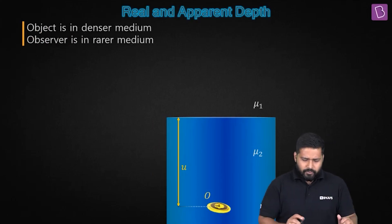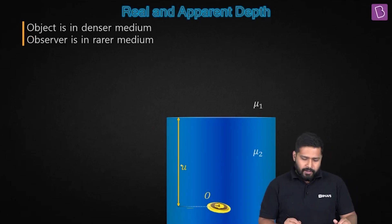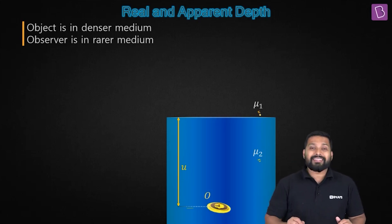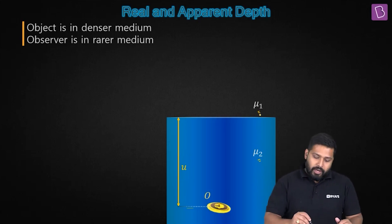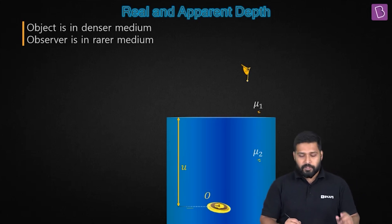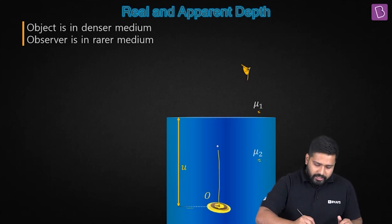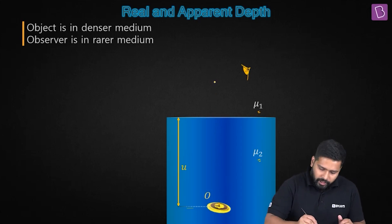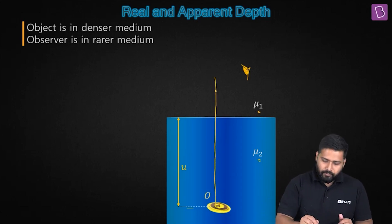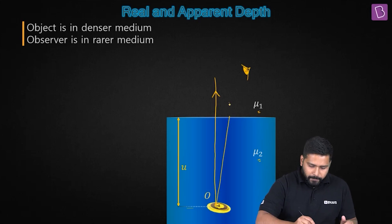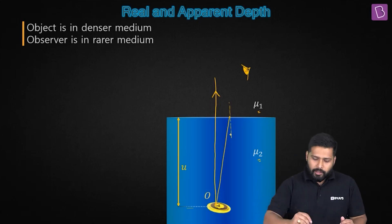The coin was lying almost at the bottom, so this is the object and this is the bottom. Here, u is our real depth, mu2 is the refractive index of water, and mu1 is the refractive index of air. If you want to observe it from this point — say this is your eye — I can take two different rays. One ray I'll take as normal incidence, which comes normally so without deviation.